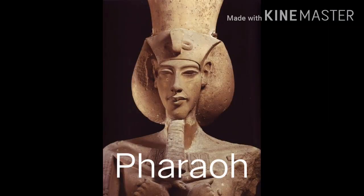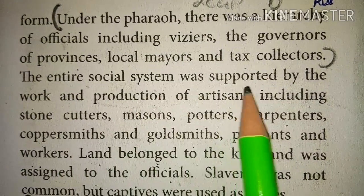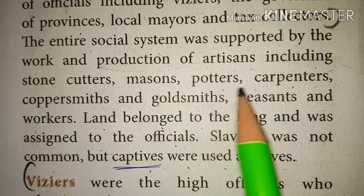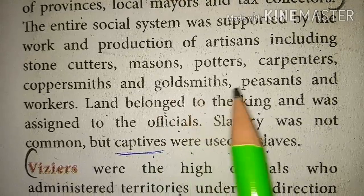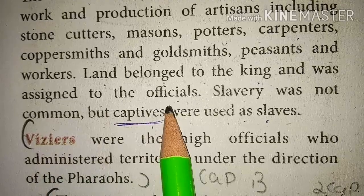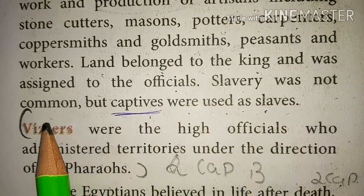Pharaoh's society and administration: The Egyptian king was known as the Pharaoh. The people treated the Pharaoh as a divine form. Under the Pharaoh there was a hierarchy of officials including viziers, governors of provinces, local mayors and tax collectors. The entire social system was supported by the work and production of artisans including stone cutters, masons, potters, carpenters, coppersmiths and goldsmiths, peasants and workers. Land belonged to the king and was assigned to officials. Slavery was not common but captives were used as slaves.